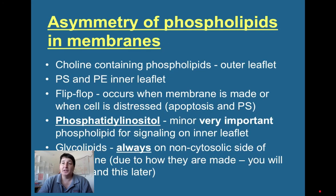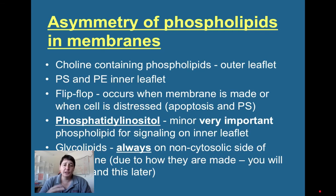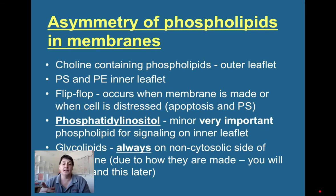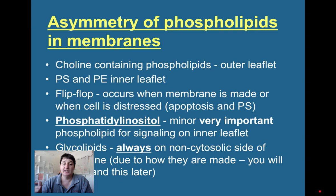The outer leaflet contains phosphatidylcholine and sphingomyelin. The inner leaflet contains phosphatidylserine and phosphatidylethanolamine. Flip-flop occurs but doesn't happen very frequently—it actually requires energy, except when cells are undergoing damage or distress, which is a signal to apoptose. The cell does suicide through a process called apoptosis, and during that time phosphatidylserine flips from the inside to the outside. Phosphatidylinositol is very important for signaling and is on the inner side. Glycolipids are always on the non-cytosolic side of the membrane.